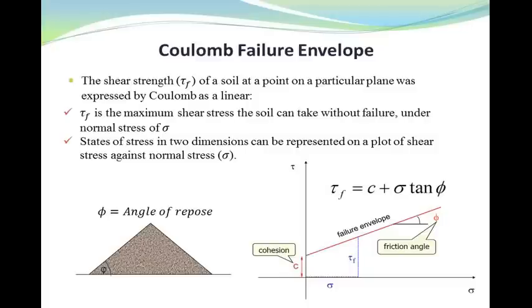Originally, the shear strength of a soil at a point on a particular plane was expressed by Coulomb as a linear function of the normal stress at failure on the plane at the same point. In this function, as you can see here, tau_f is the maximum shear stress the soil can take without failure under normal stress sigma. Thus, failure will occur at any point in the soil where the critical combination of shear and normal stresses develops.